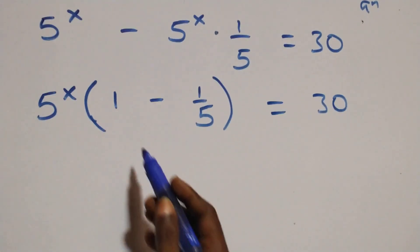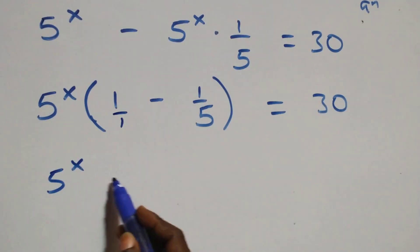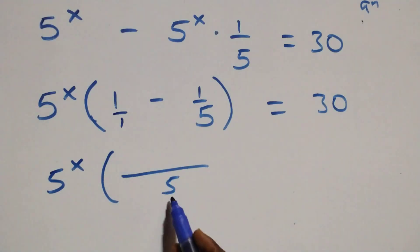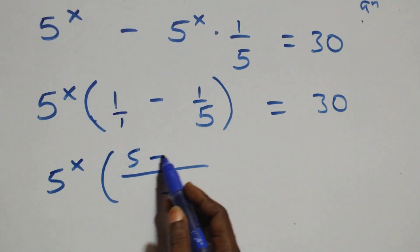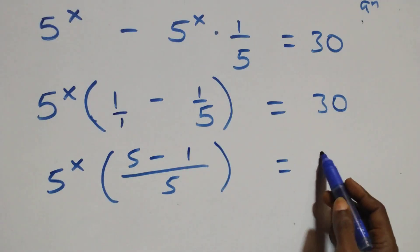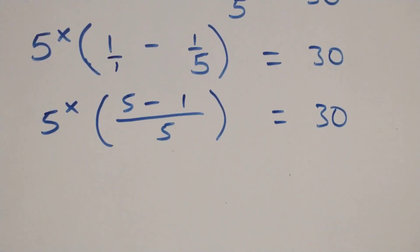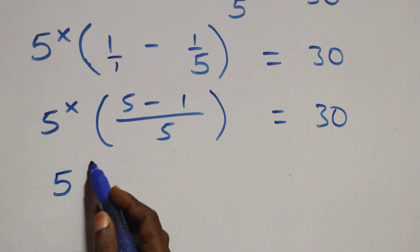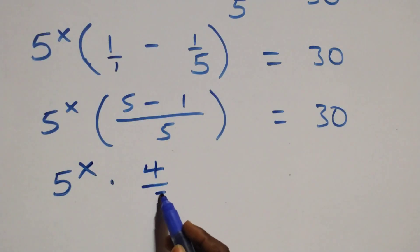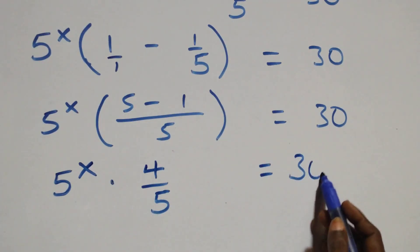When we bring this together as a fraction, the common denominator is 5. So we have 5 raised to power x into bracket, with numerator 5 times 1 minus 1, that gives 5 minus 1, which is 4, over 5, close bracket, equals to 30 on this side. So we have 5 raised to power x times 4 over 5 equals to 30.